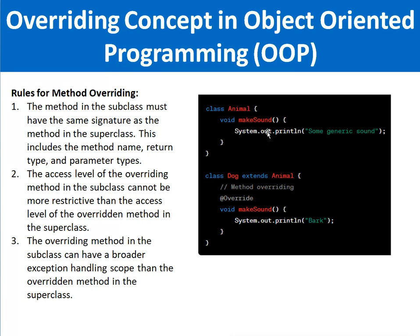Let me give an example through source code. Here we have a class Animal with a method void makeSound that prints 'some generic sound' — this is the base class. Then class Dog extends Animal, meaning Dog is the child class or subclass which is inherited from the Animal class. Since it extends the base Animal, it has an overridden method which is void makeSound that prints 'bark'.